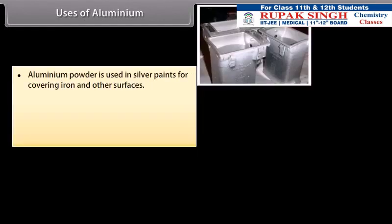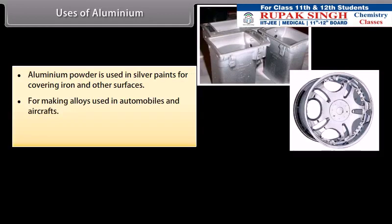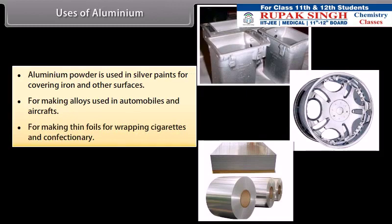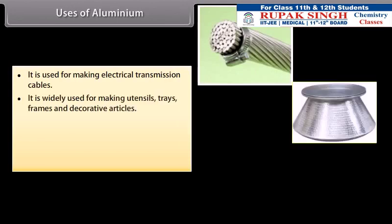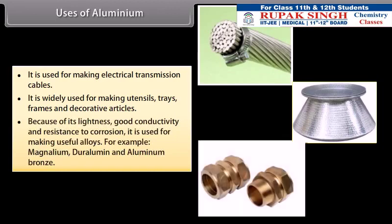Uses of aluminium. Aluminium powder is used in silver paints for covering iron and other surfaces, for making alloys used in automobiles and aircrafts, for making thin foils for wrapping cigarettes and confectionery. It is used for making electrical transmission cables. It is widely used for making utensils, trays, frames and decorative articles because of its lightness, good conductivity and resistance to corrosion. It is used for making useful alloys. For example, magnalium, duralumin and aluminium bronze.